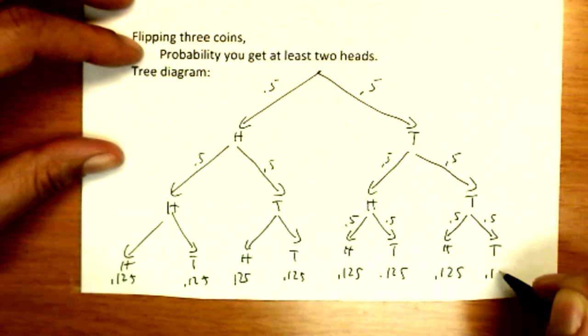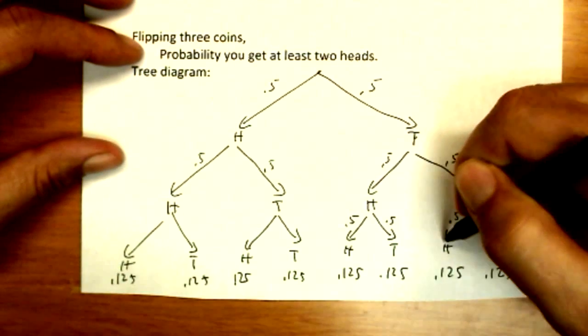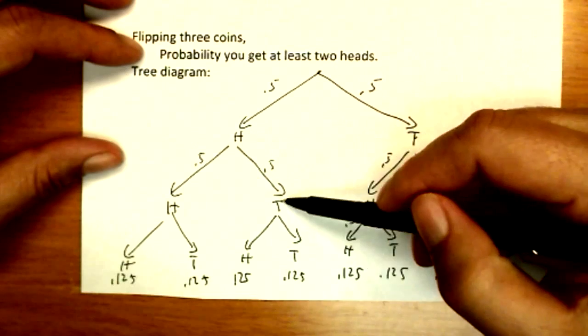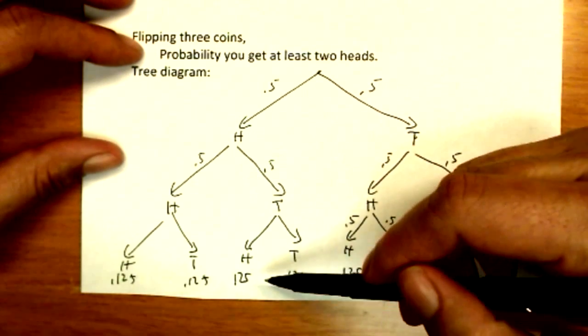So the way we read this tree, this is the event of getting a tail, a tail, and a head. Or in this case head, tail, head. Or whichever letters you come across on the way down.